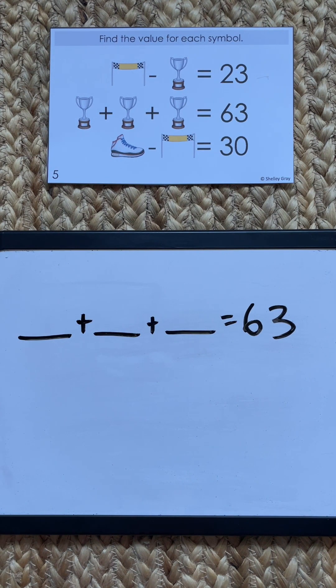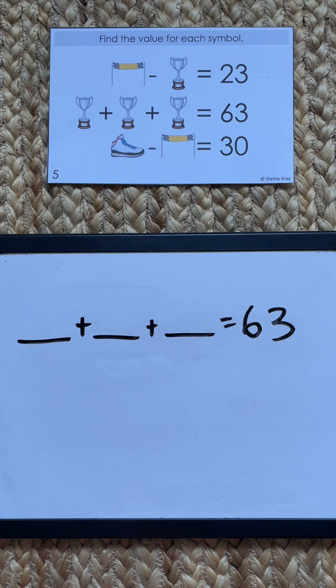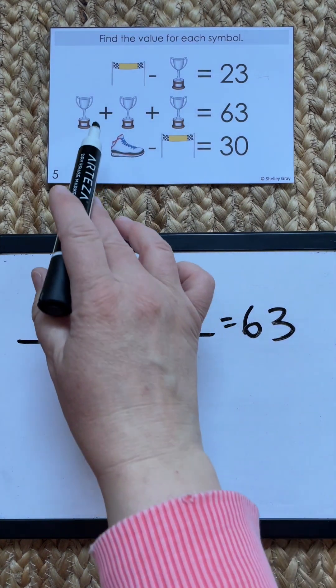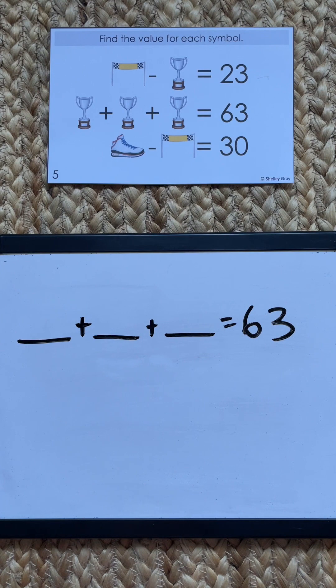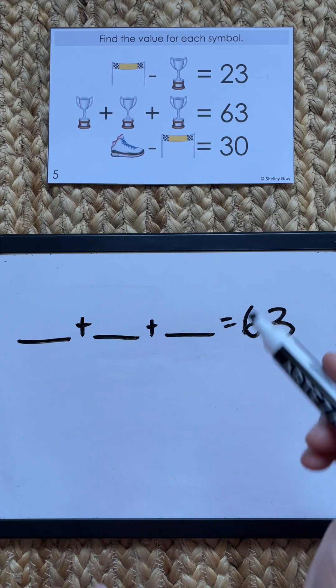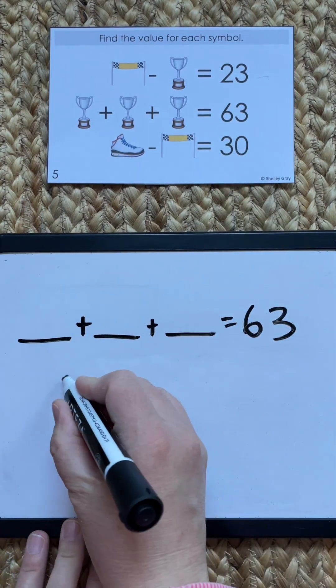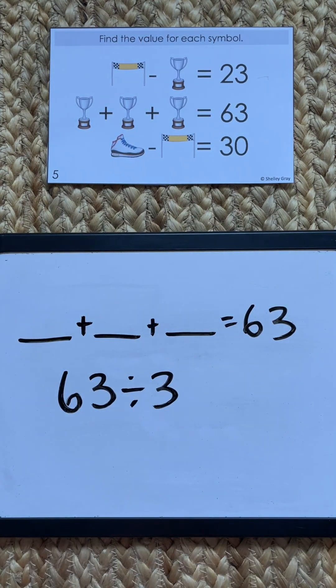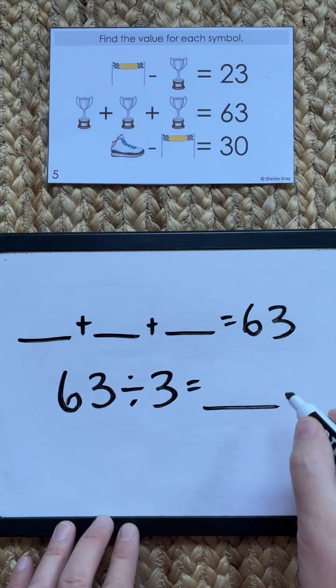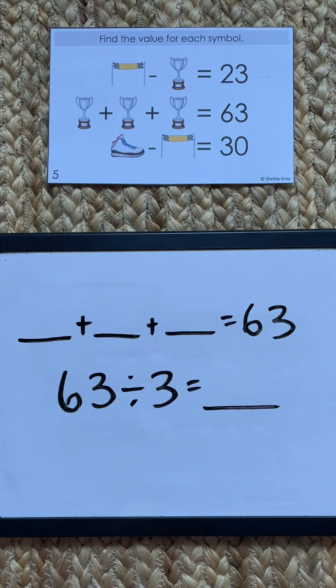So you know, just kind of adding three random numbers to see if they make 63 when we add them up. Obviously where we want kids to get is to a place where they realize that this repeated addition we can relate that to multiplication and division. In this case we want kids to realize that if we just did 63 and divided it into three equal groups, that will tell us what the value of the trophy is.